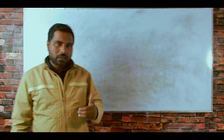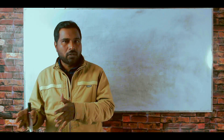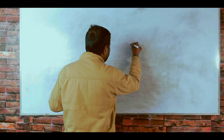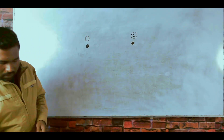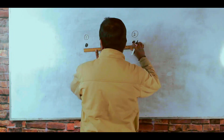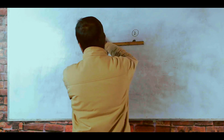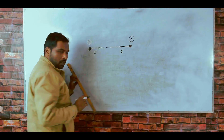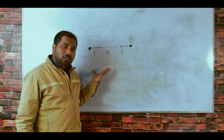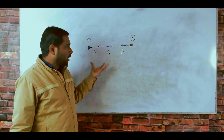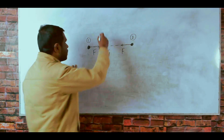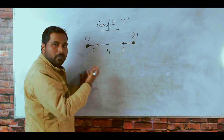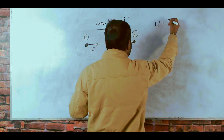Let us consider a two-particle system where the particles apply conservative forces on each other. Particle 1 and particle 2 are applying conservative forces on each other, and suppose the conservative force acting is F. Let them be at a separation R1. This is one configuration of the system — configuration I — and corresponding to this configuration, the system will have some potential energy, U_i.